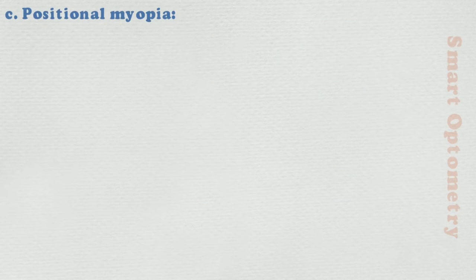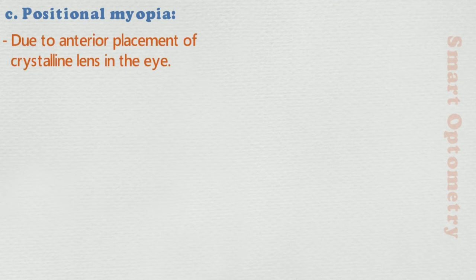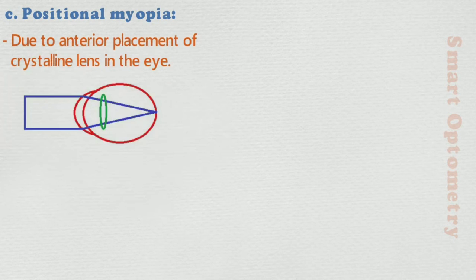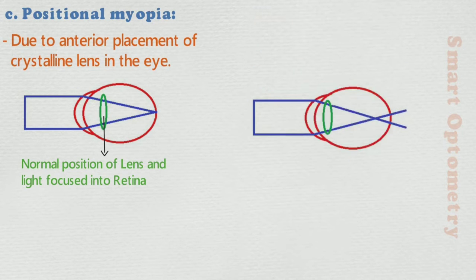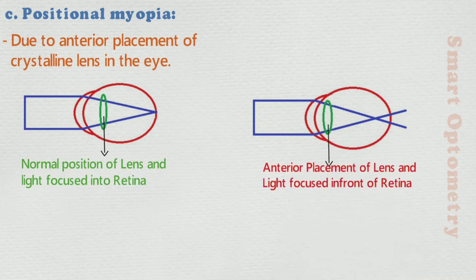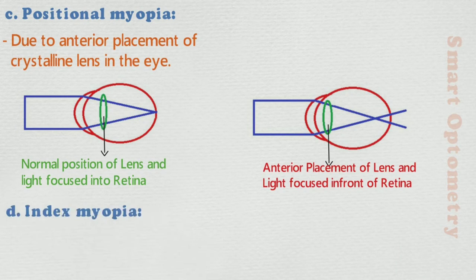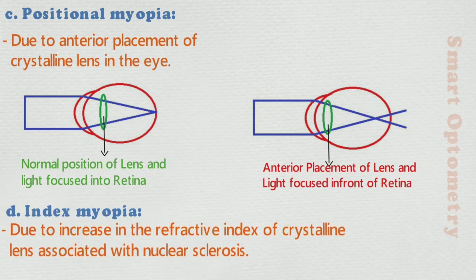C. Positional myopia: it occurs due to anterior placement of the crystalline lens in the eye. And here, in this figure, anterior placement of the lens causes light to be focused in front of the retina. D. Index myopia: it occurs due to an increase in the refractive index of the crystalline lens associated with nuclear sclerosis.